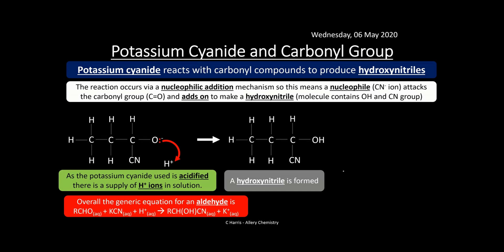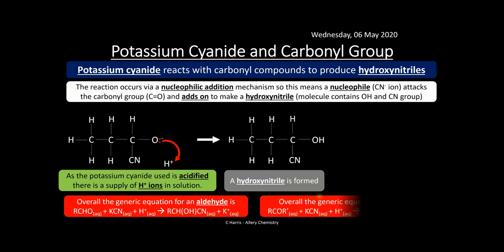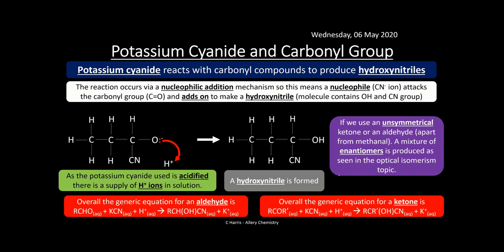The overall generic equation for an aldehyde is: RCHO + KCN + H⁺ → hydroxynitrile + K⁺. The hydroxynitrile will be on a terminal carbon if reacting with an aldehyde. With a ketone it's exactly the same, except the hydroxynitrile forms on a middle carbon. If we use an unsymmetrical ketone or an aldehyde other than methanal, a mixture of enantiomers is produced — this is covered in the optical isomerism topic.